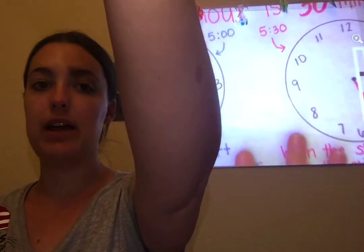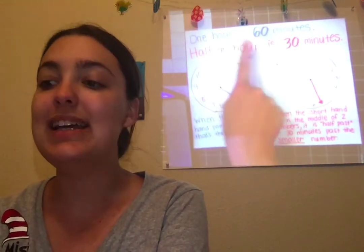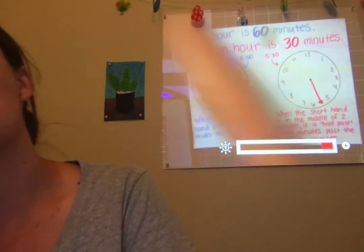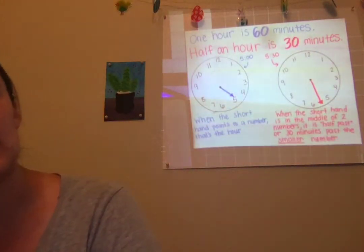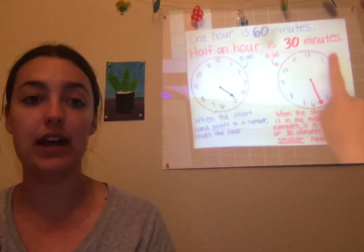We're going to be focusing on telling time to the hour — like one o'clock, two o'clock, three o'clock — and to the half hour — like one thirty, two thirty, three thirty. I'm going to bring back this chart we used last week. One hour is 60 minutes, and half an hour is 30 minutes.